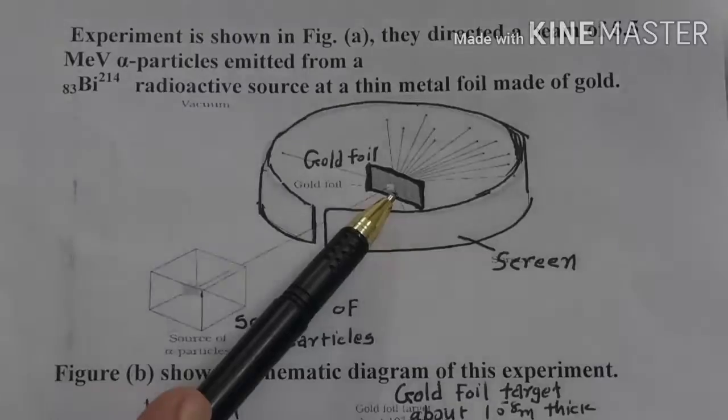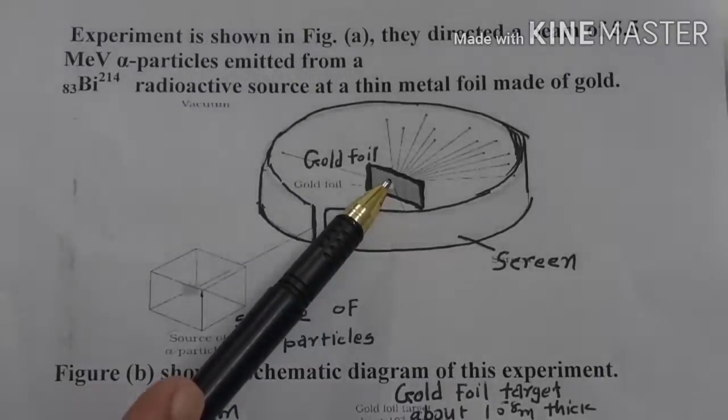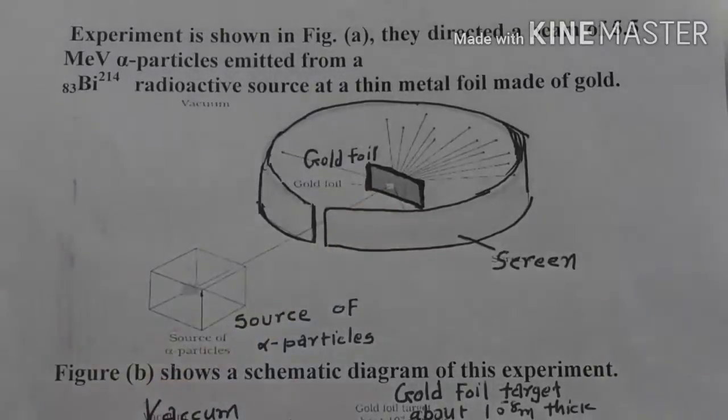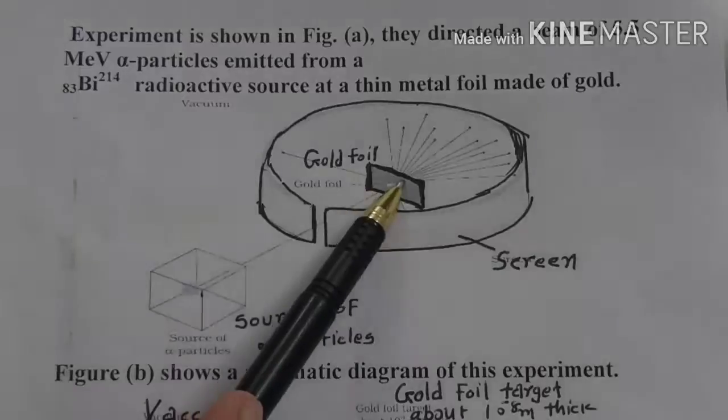Very thin layer of the size 10 to the power minus 8 meter. Why they kept this layer of gold very thin in the form of foil? Because to avoid the multiple scattering, they want to study a single scattering rather.